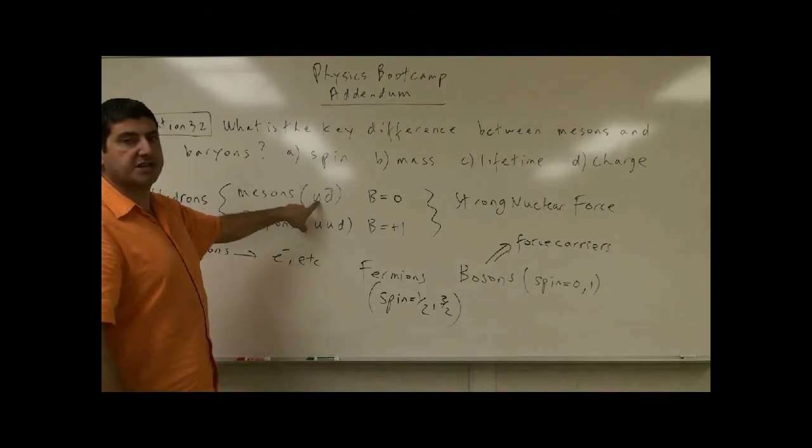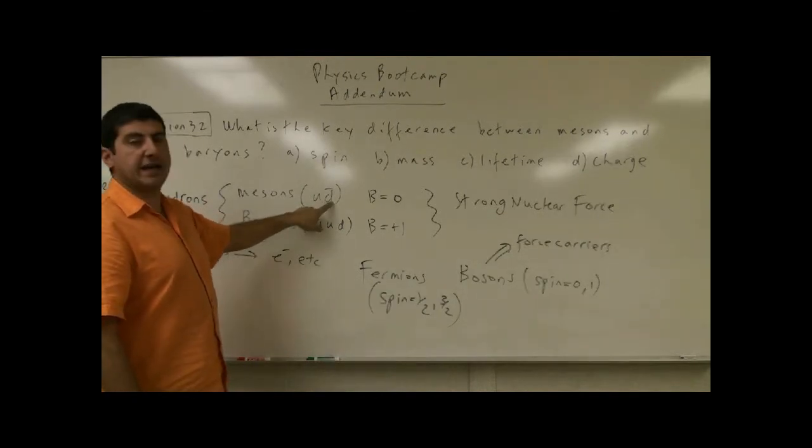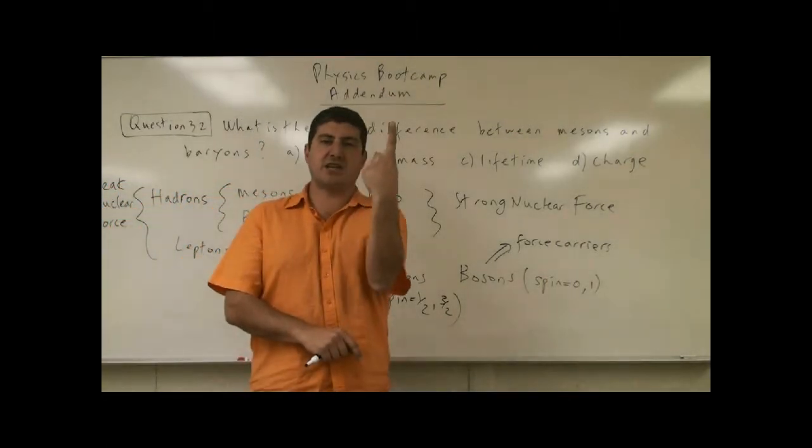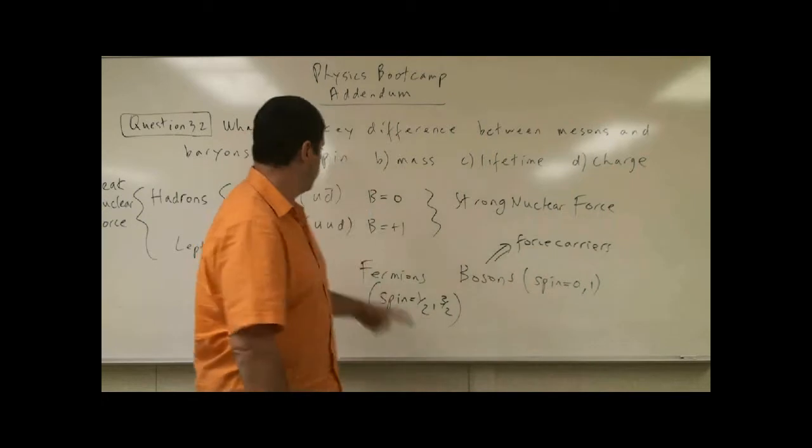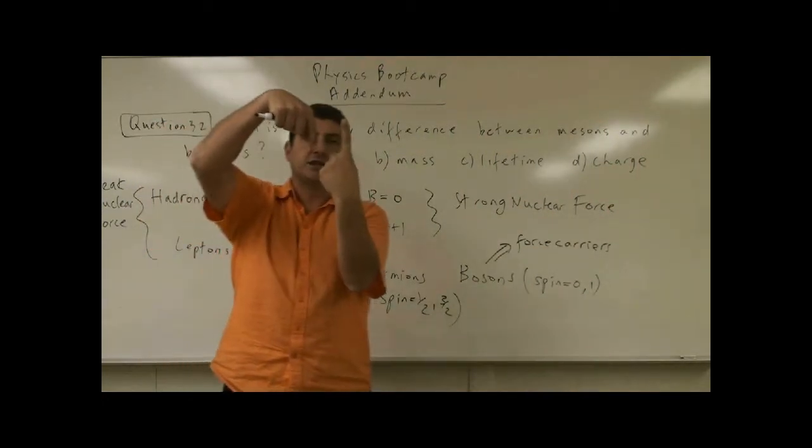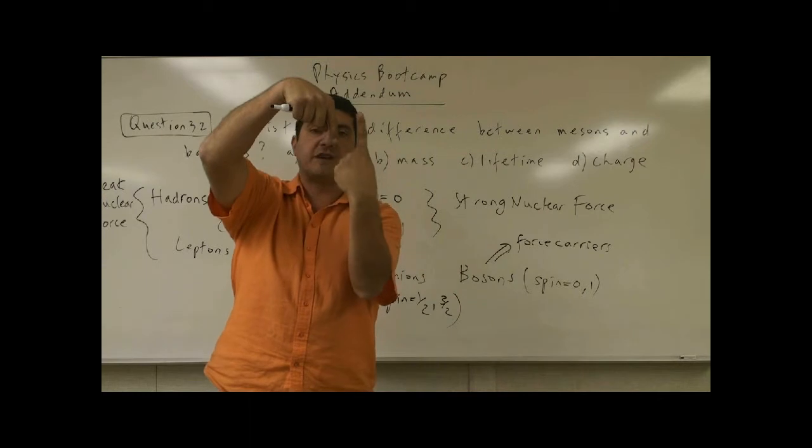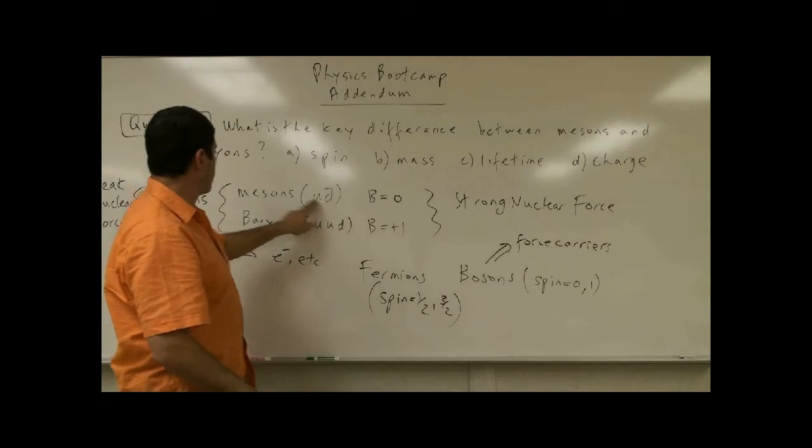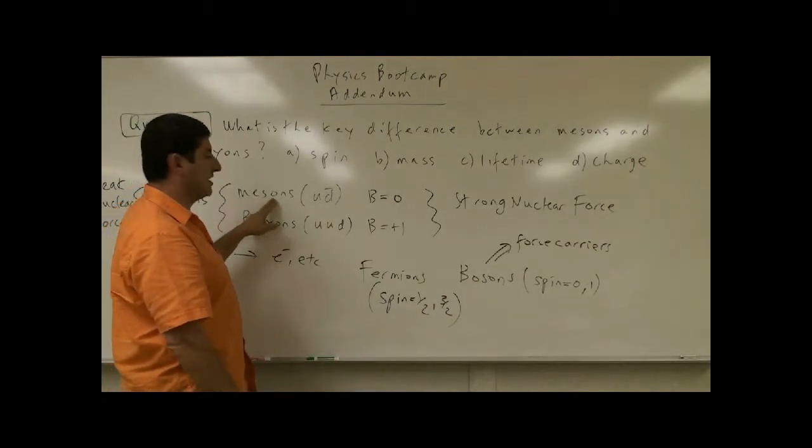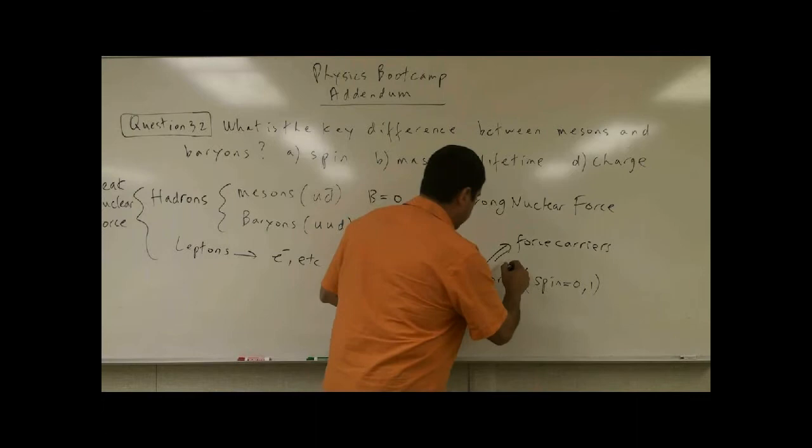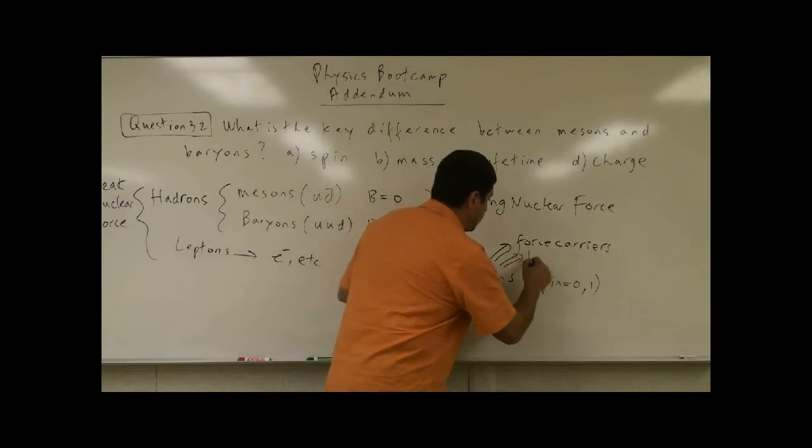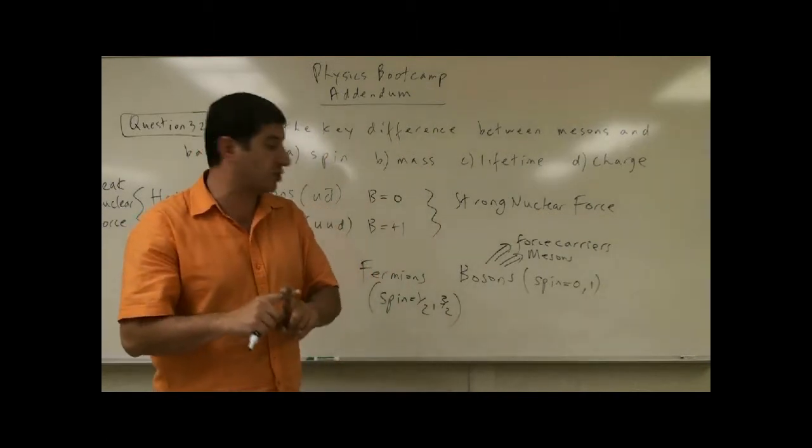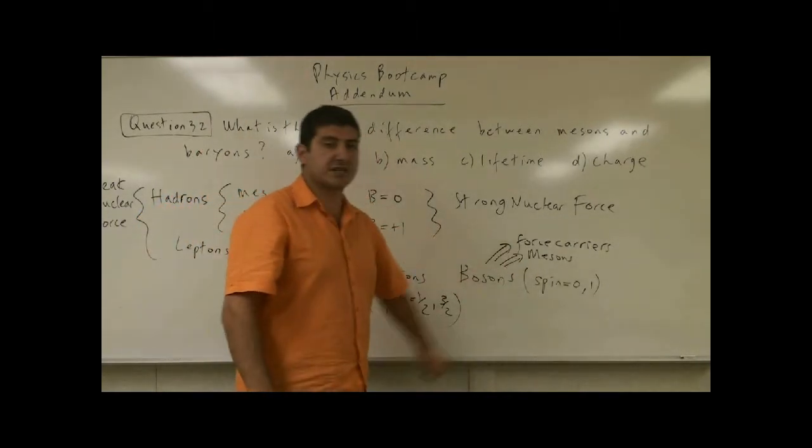Mesons. Look at this. The up quark has a spin half. The anti-down quark has a spin negative half. Basically, it's like a spin half. Think of your finger pointing up. The anti-down quark has a spin negative half. Think of your finger pointing down. They cancel each other. Their spins cancel each other. Therefore, all mesons have a spin of zero. So the boson could also be mesons. So not only are force carriers in nature bosons, but mesons are also bosons.